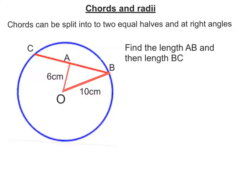In this question, we're asked to find the length AB and then the length BC. What you need to see here is we've got OB is a radius, OC is a radius. So OCB is an isosceles triangle.